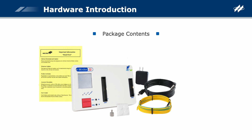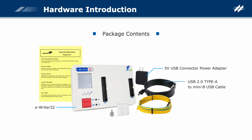The following introduces the eWriter32 package contents. eWriter32: writer for programming the HT32 MCUs. 5-volt USB connector power adapter: the power adapter, together with a USB 2.0 cable in offline programming mode, provides power to the writer. USB 2.0 cable: for connecting to a PC USB port (online mode) or a 5-volt power adapter (offline mode). Ground wire: for connecting to the eWriter32 ground port. Important information card. Screws with G15 ground terminal.